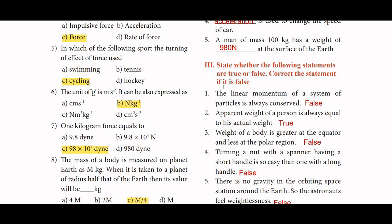For a weight of 100 kg, we convert using 9.8 — so weight equals 100 × 9.8 newtons. Most people need to calculate this. In the case of 60 kg, weight equals 600 newtons. This is the force that the earth exerts.